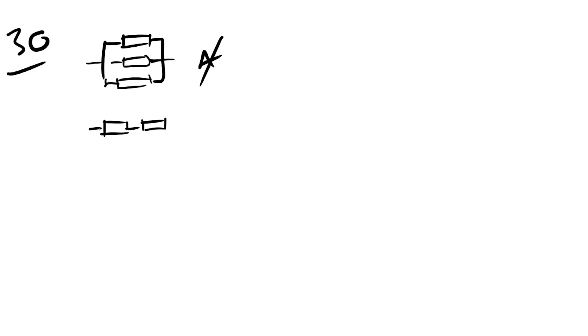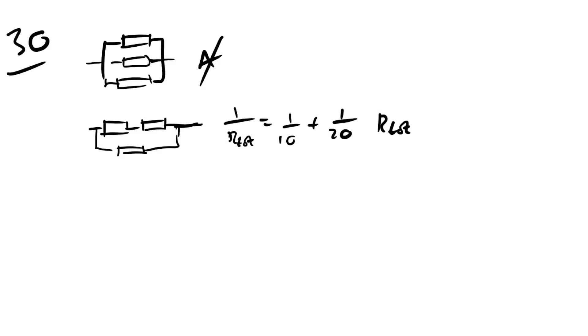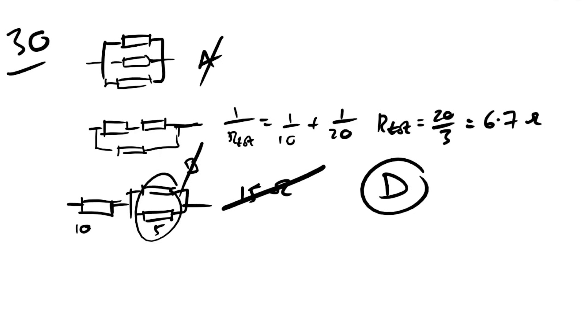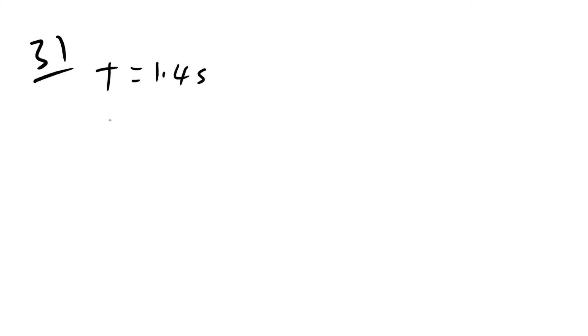Question 30: which resistance cannot be made by combining three 10 Ω resistors? All three in parallel give 10/3 ≈ 3.3 Ω; two in parallel plus one in series give 5+10 = 15 Ω; one in parallel with two in series can give 6.7 Ω. 25 Ω cannot be achieved. The answer is D.